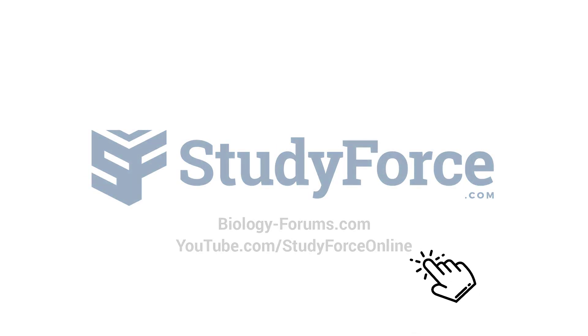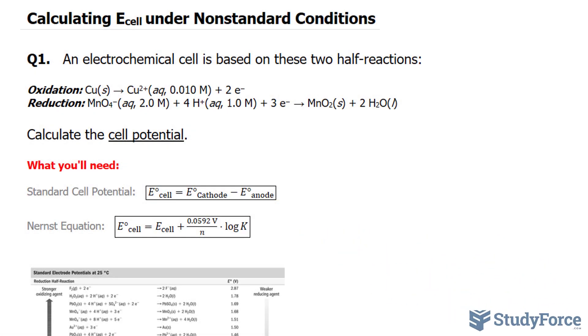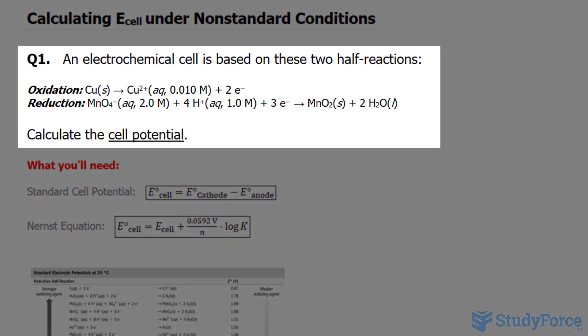In this lesson, I'll show you how to calculate the cell potential under non-standard conditions. The question reads, an electrochemical cell is based on these two half-reactions. Calculate the cell potential.